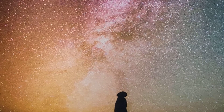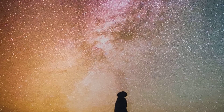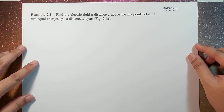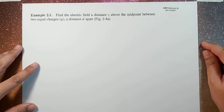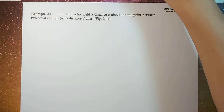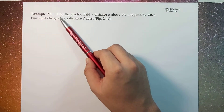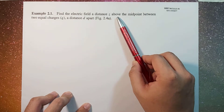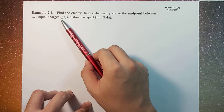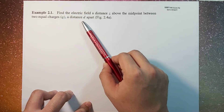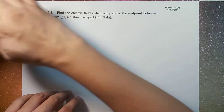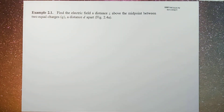What's up guys, it's me Sir Earnest, and today we're going to talk about Example 2.1 of Griffith's Fourth Edition. The problem reads: find the electric field at distance z above the midpoint between two equal charges with the same charge q and distance d apart, as shown in figure 2.4a. So let me draw figure 2.4a first.